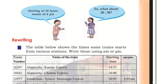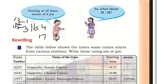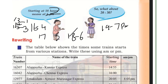18 hours means 6 PM. 14 hours means 2 PM. 15 hours means 3 PM. 16 hours means 4 PM. 17 hours means 5 PM. 18 hours means 6 PM. 19 hours means 7 PM.